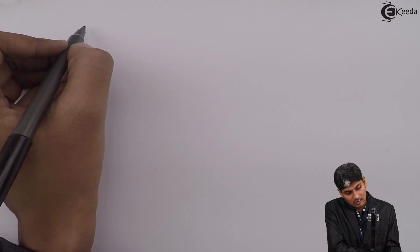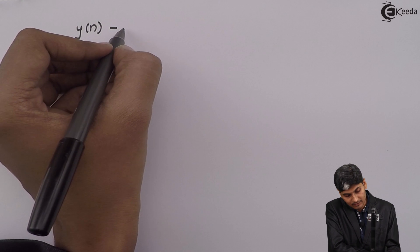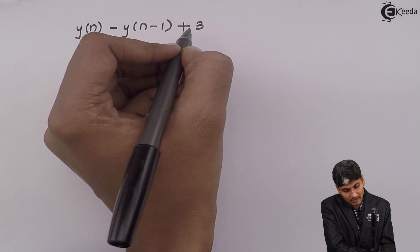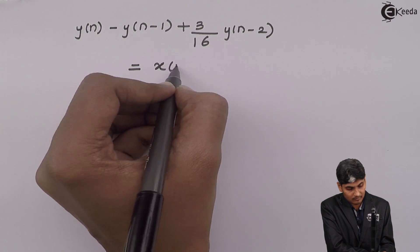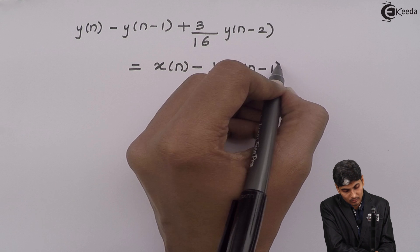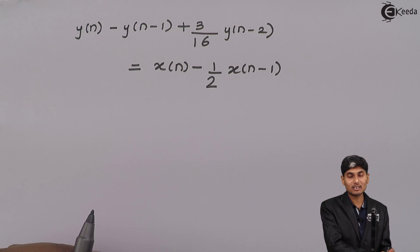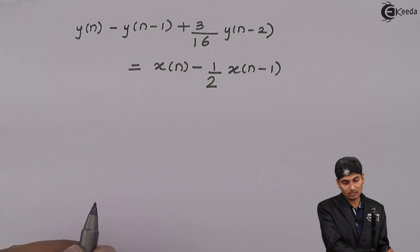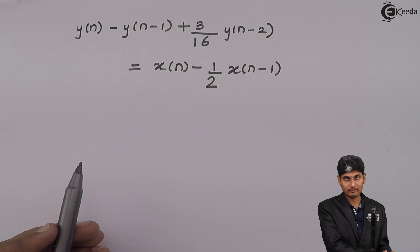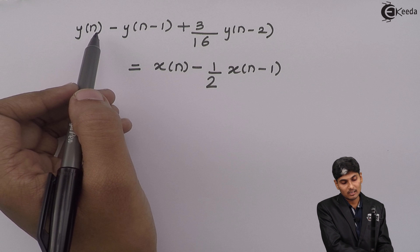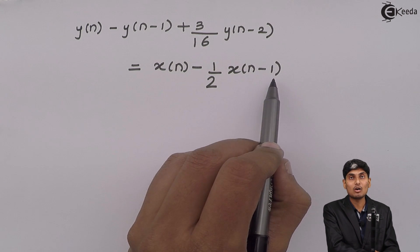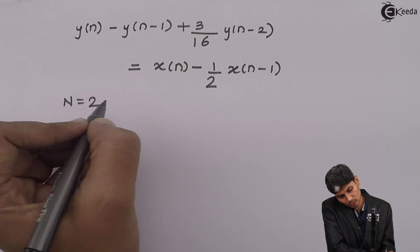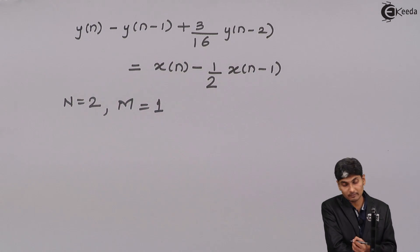Let us see a problem on pole-zero representation. The problem for today is: y(n) - y(n-1) + (3/16)y(n-2) = x(n) - (1/2)x(n-1). This is a difference equation with a set of y's and a set of x's. Here the n range is 2 and the m range is 1, so n = 2 and m = 1.